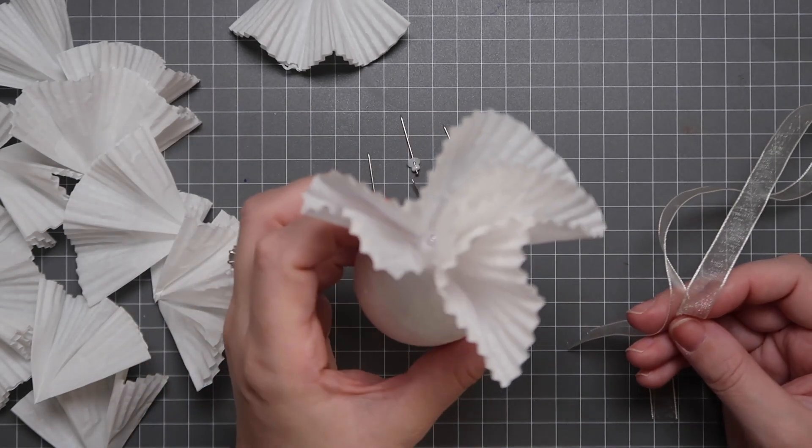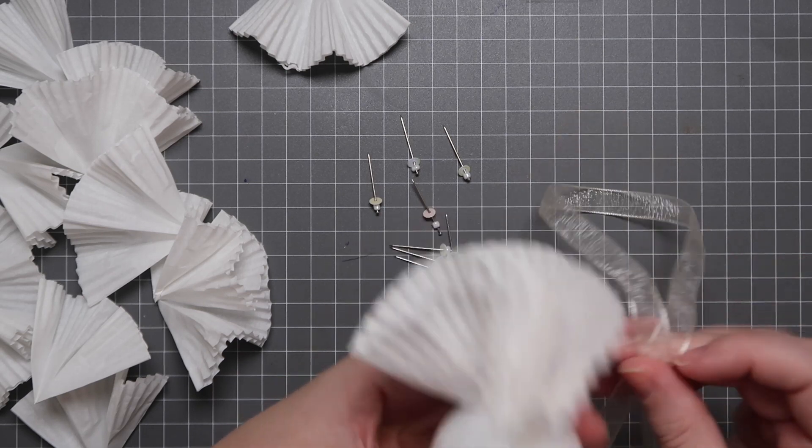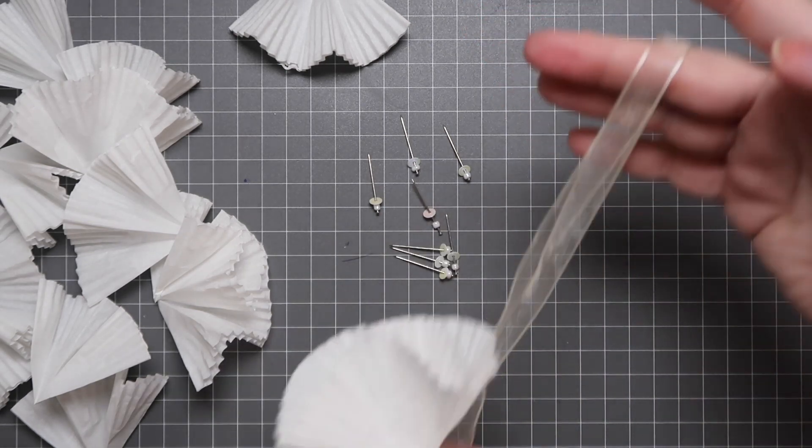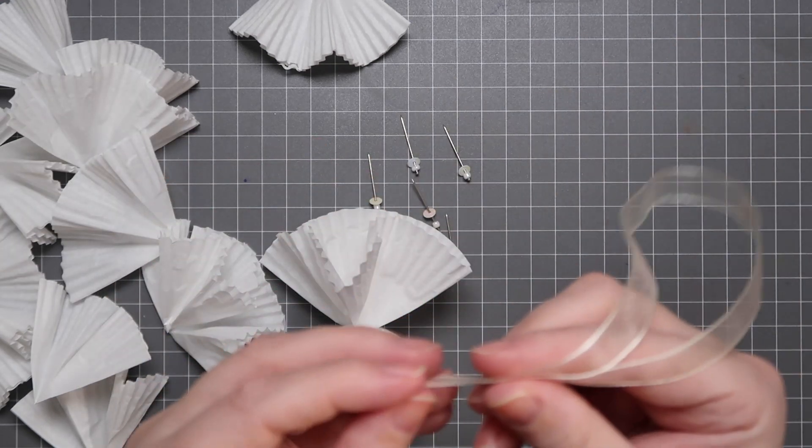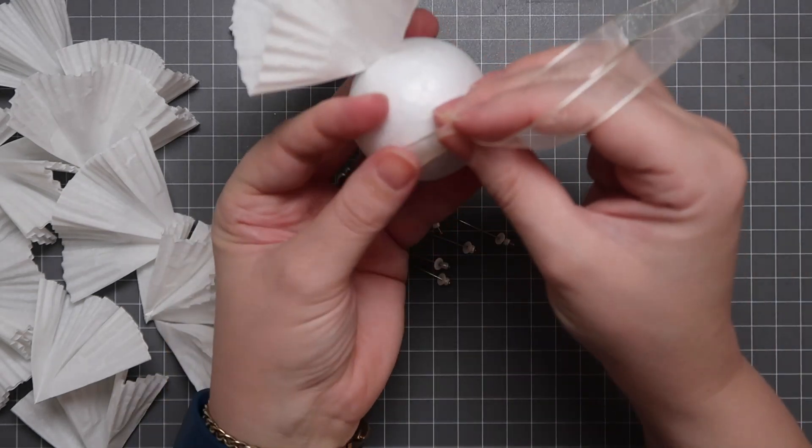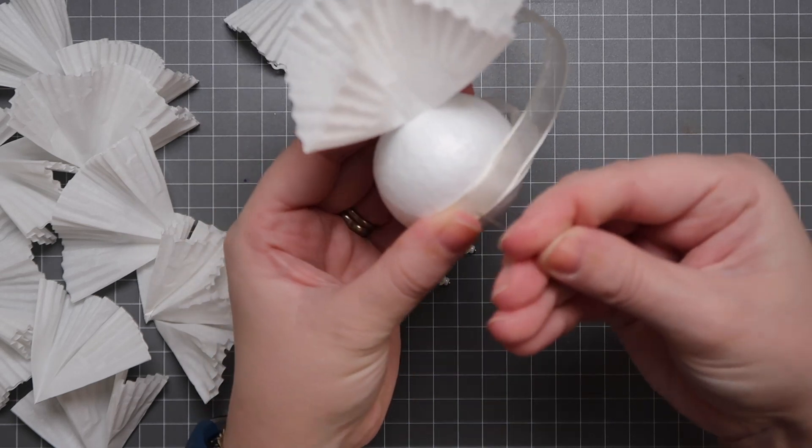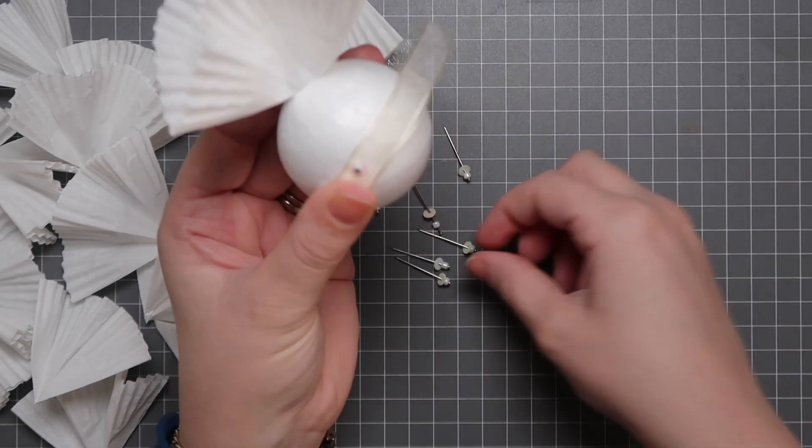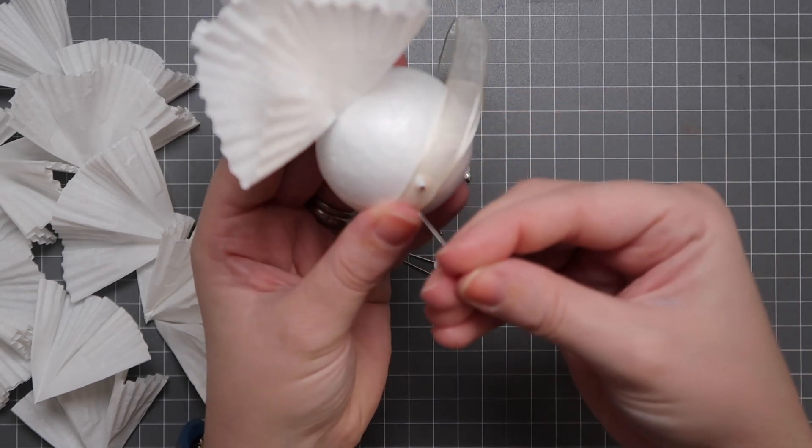Now after you've got a couple attached, now's a good time to attach the ribbon. So you know how far up the ribbon's going to go, and it won't get in the way of your final piece. So I would do it a little bit of a distance away from the ones you've just put in and stick at least two pins with the sequin and the seed bead on it.